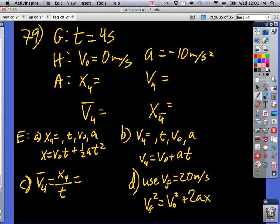Because I know all that other stuff. And if I plug it in, V₀ is zero. So that goes away. And so I get one half AT squared. Well, T squared is 16. So that gives me negative 80 meters. Does that make sense to you?